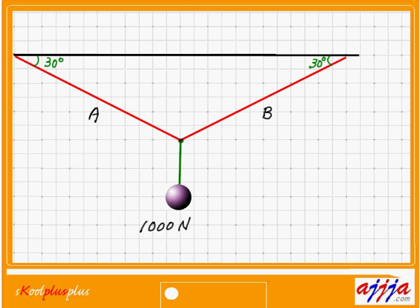I have an object hanging on the ceiling with two ropes, A and B. I'm going to find out the tension of A and the tension of B. The best way is to make a triangle. Now I have two right triangles, so I can use sine, cosine, things like that.